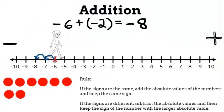Following the rule, since the signs are the same, we would add 6 plus 2, which equals 8. And since they were both negative, our answer is negative.